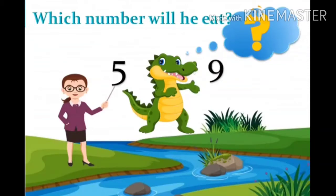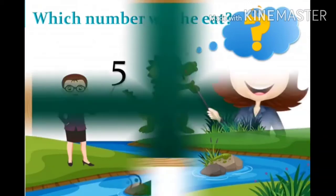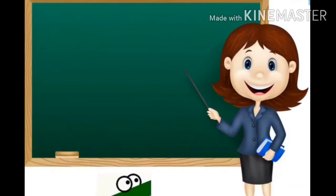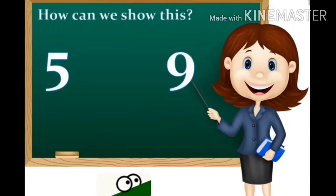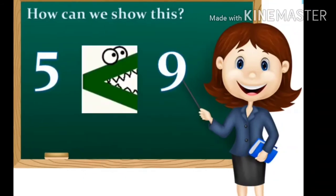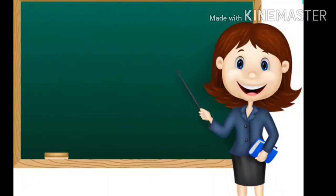Charlie will eat number nine because it is greater in number. Now, let us look at the board and see how we will compare the numbers using Charlie's mouth. We have two numbers. Number five and number nine, which is greater. Number nine because number nine is greater than five.